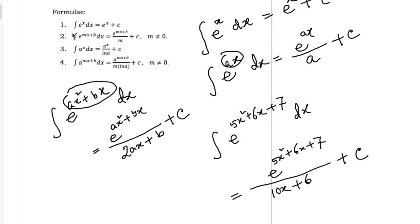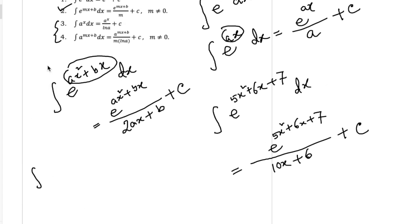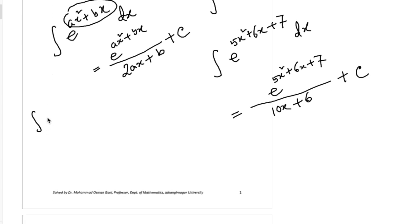So we understand Formula 1 and Formula 2. Now Formula 3 and 4. Here the base is not e — instead it is another constant or real number. So instead of having base e, if your base is another constant like a, giving a to the power x, then your result will be a to the power x, but in addition you need to divide this result by ln a, plus c.